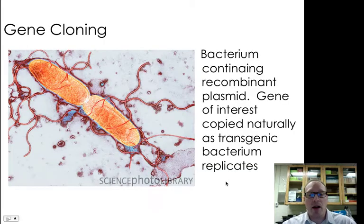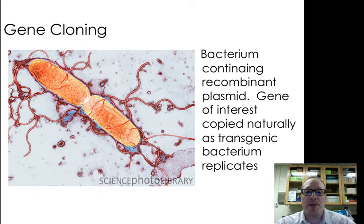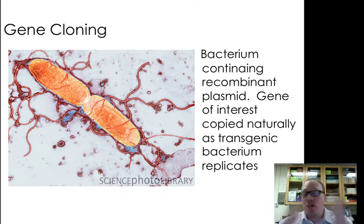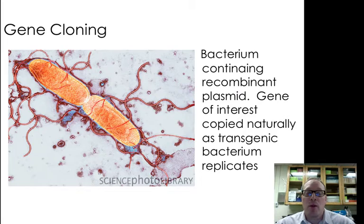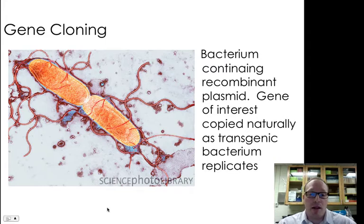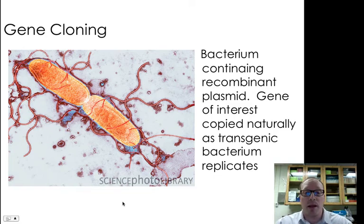Let's talk about gene cloning first. Gene cloning is something that happens as a natural consequence of the reproduction of transgenic organisms. For example, let's say we've got a bacterium that contains a recombinant DNA plasmid, and our gene of interest — like the human insulin gene — is in that recombinant plasmid. As that cell begins to reproduce itself, the DNA will replicate naturally. So as a natural consequence of this organism's reproduction — particularly these single-cell bacteria, which reproduce by binary fission — the DNA in those cells will replicate, and more copies of that gene are going to be produced.